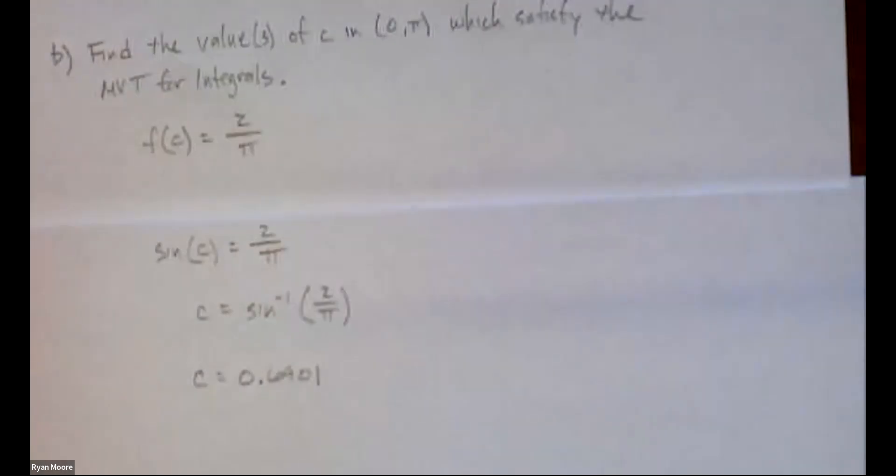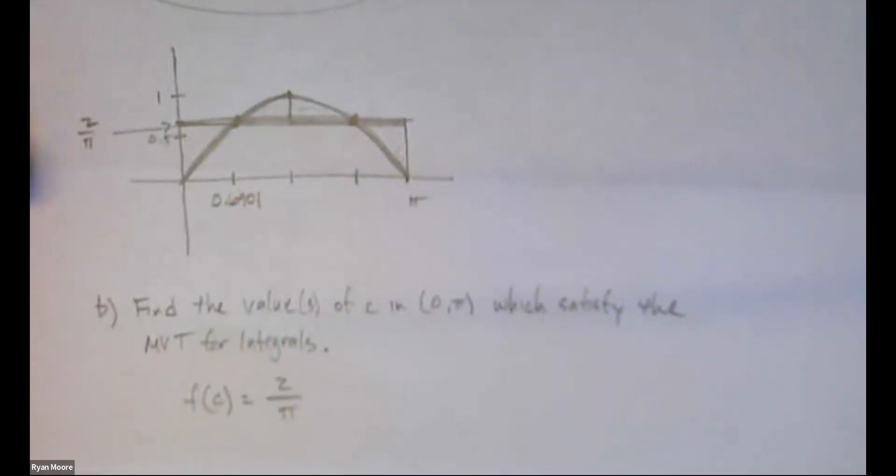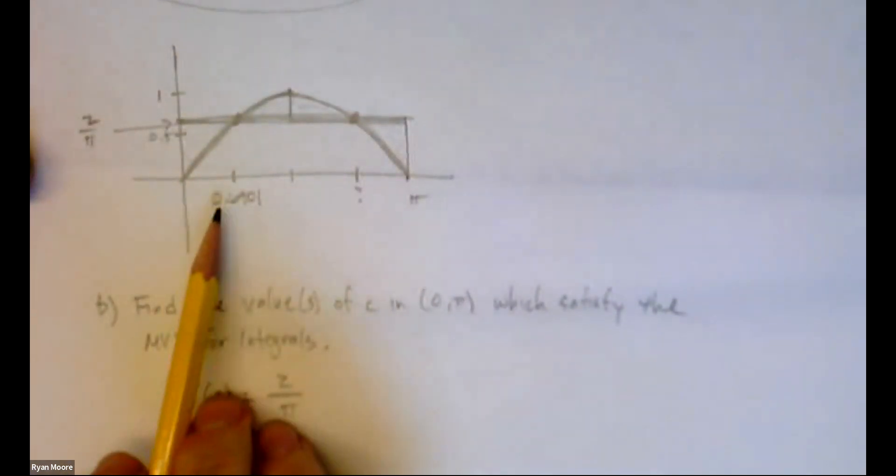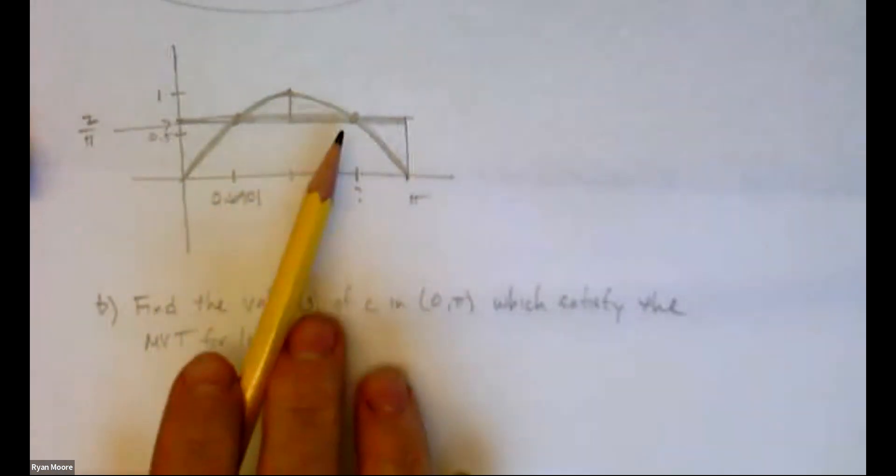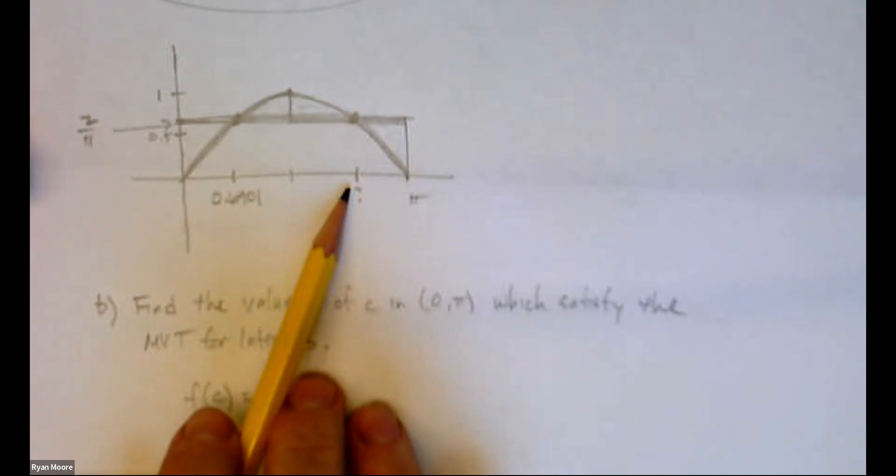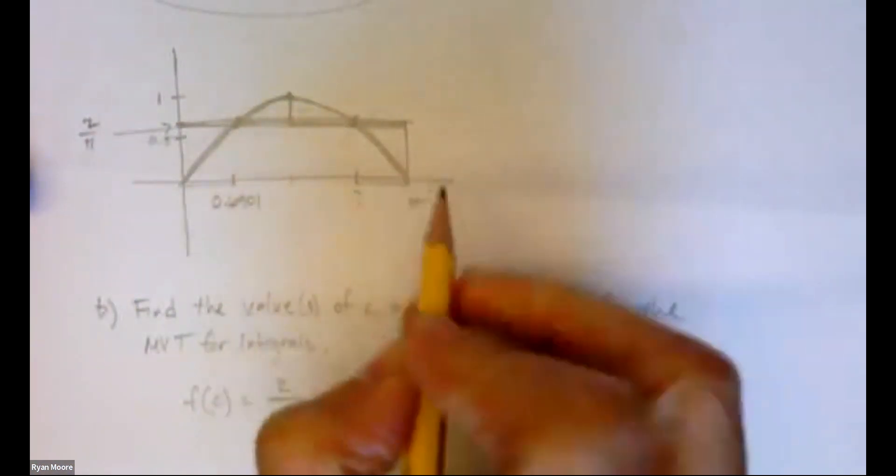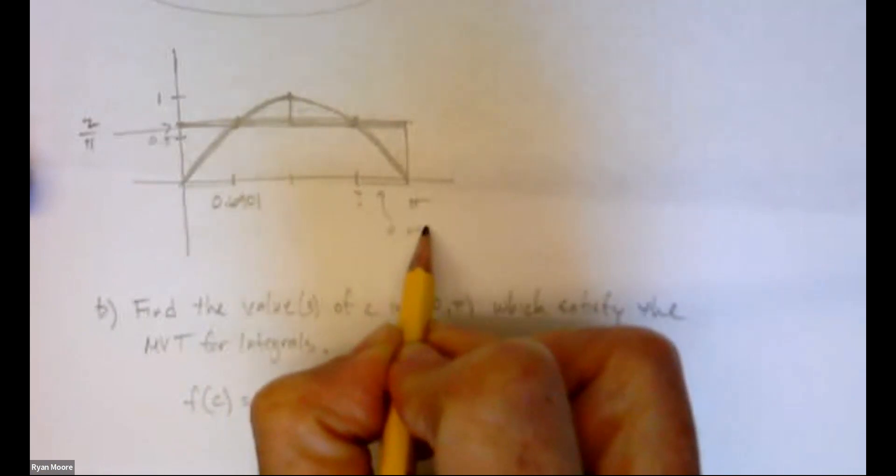But we recognize that there are two. So our calculator gave us this, or my calculator, six, nine, oh, one. So where is this one over here, right? Using inverse sine in the calculator is only going to give one answer. So how do we come up with the other answer? One way to do it, or maybe the only way to do it, is to realize, hey, that means this distance here is the 0.6901. And it's got to be symmetrical. So that's got to be the same distance. That's also 0.6901.